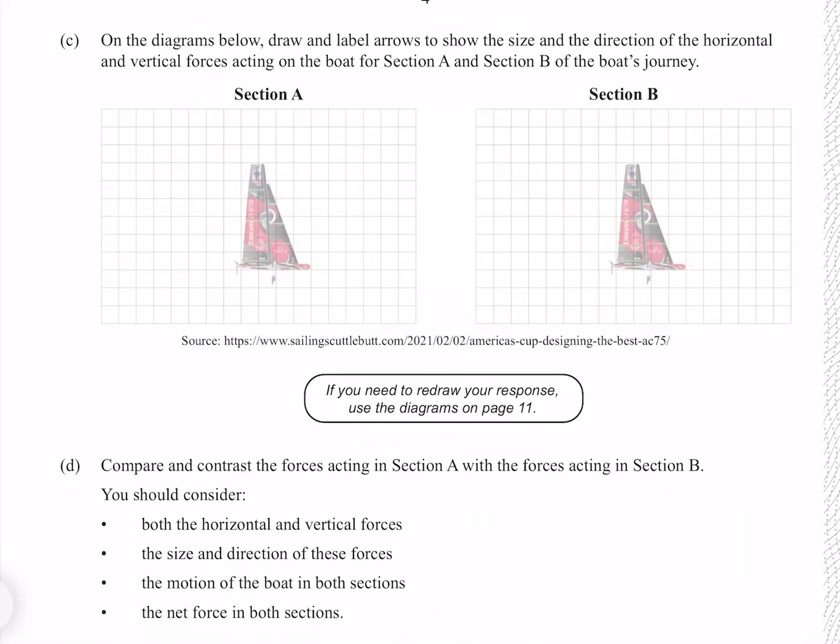On the diagrams below, draw and label arrows to show the size and direction of the horizontal and vertical forces acting on the boat for section A and section B of the boat's journey. In our section A we're going to have a force upwards from buoyancy, which because the boat isn't moving up or down must be equal to the downwards force of gravity. We're going to have a forwards force from the wind, which I'm going to call our thrust force, and a force backwards which will represent our friction force both with the air and with the water. Our forwards force must be greater because our boat is accelerating.